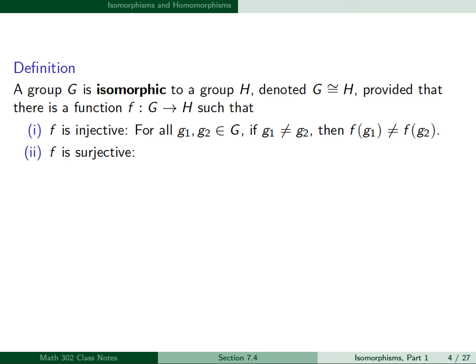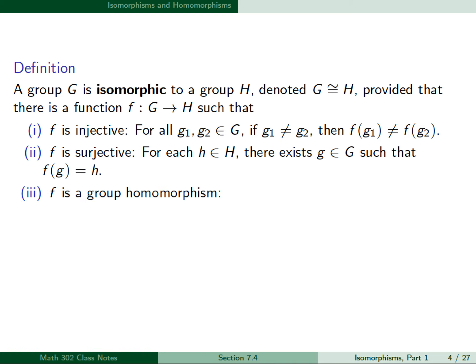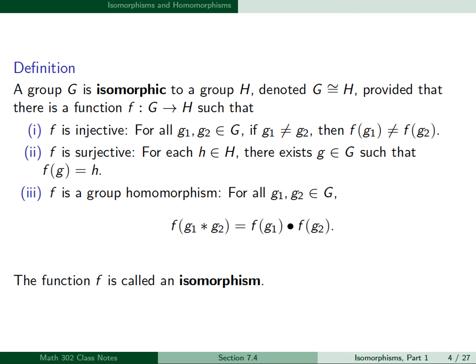Second, f is surjective: for each h in H, there exists a g in G such that f(g) = h. And third, f is a group homomorphism: for all g1, g2 in G, f(g1 ★ g2) = f(g1) · f(g2). The function f is called an isomorphism.